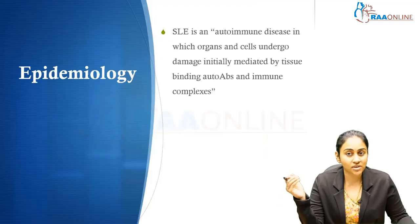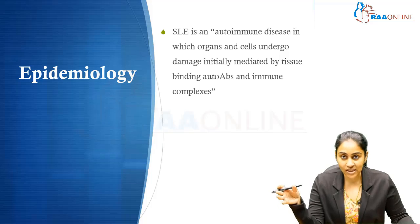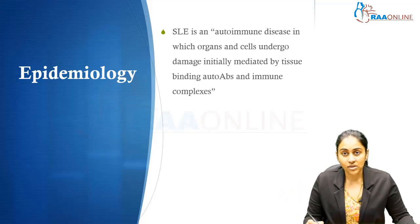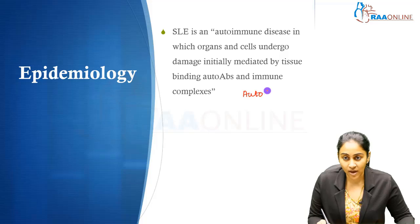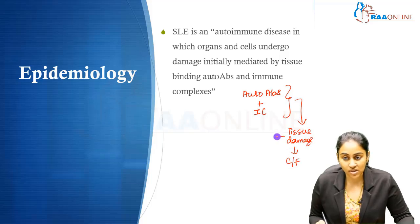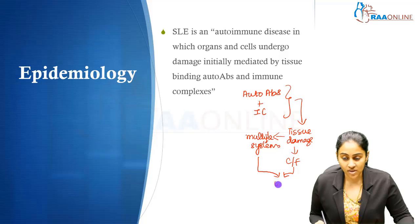Systemic lupus erythematosus is a multi-system autoimmune disease in which organs and cells undergo damage mediated by autoantibodies that bind to tissues, and also by immune complexes. These autoantibodies and immune complexes join together and result in significant tissue damage, which is responsible for all the clinical features of SLE. Because this tissue damage occurs across several systems, you see clinical features across multiple organ systems.